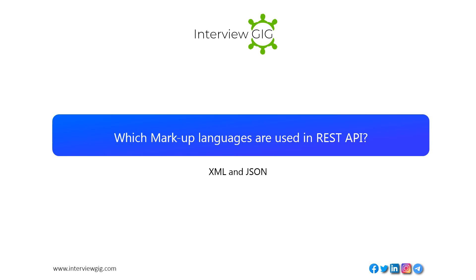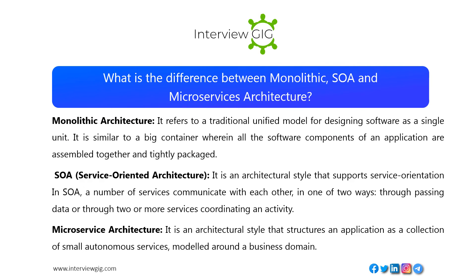Which markup languages are used in REST API? XML and JSON. What is the difference between monolithic, SOA, and microservices architecture? Monolithic architecture refers to a traditional unified model for designing software as a single unit — like a big container wherein all software components are assembled and tightly packaged. SOA (Service-Oriented Architecture) is an architectural style that supports service orientation, where a number of services communicate through passing data or coordinating an activity.